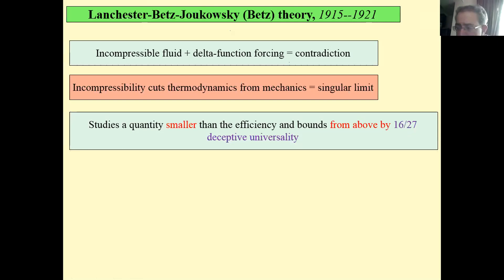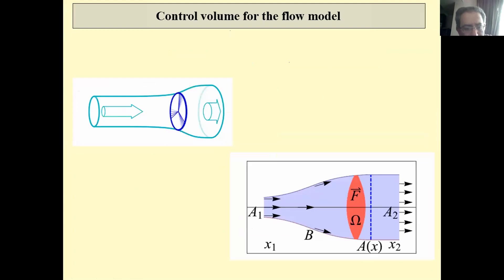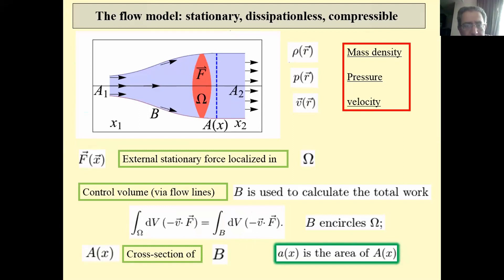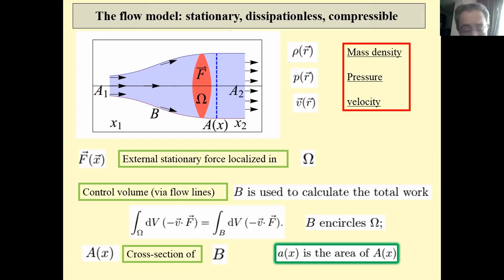A final question: wouldn't the Navier-Stokes equations be more appropriate than the Euler equations? Certainly — with Navier-Stokes, conservation laws are replaced by something else, and the definition of control volume also changes. This extension has not yet been done, but it would be both interesting and relevant since viscous effects are certainly important.